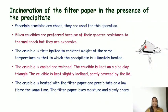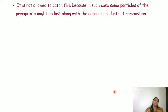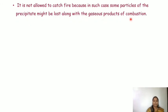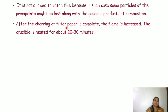The crucible containing the filter paper and precipitate is heated on a low flame for some time. The filter paper loses moisture and slowly chars. It is not allowed to catch fire, because if it does, some particles of the precipitate might be lost with the gaseous products of combustion.